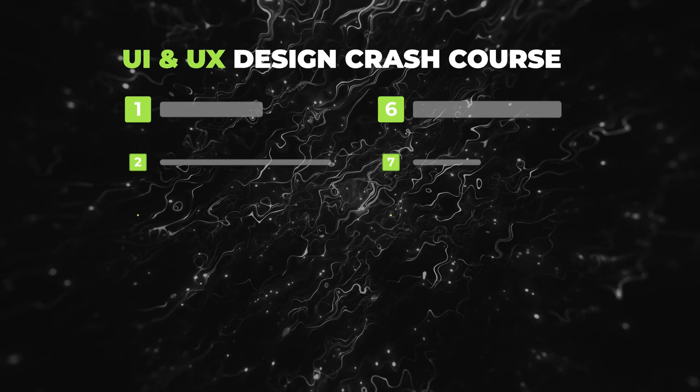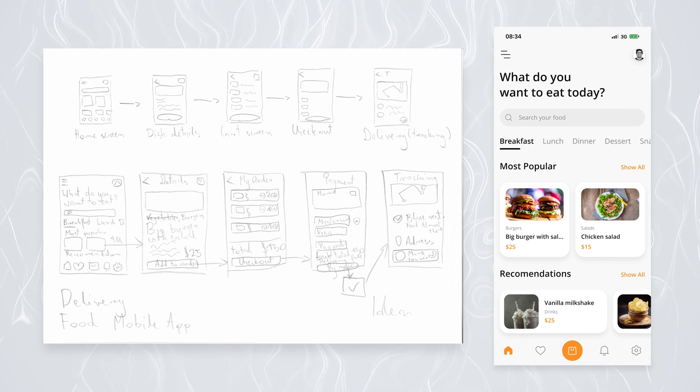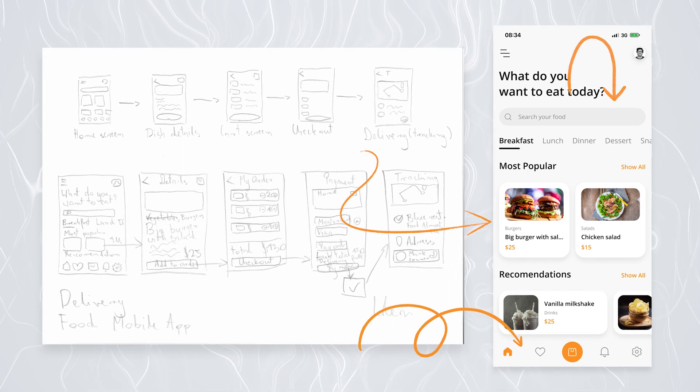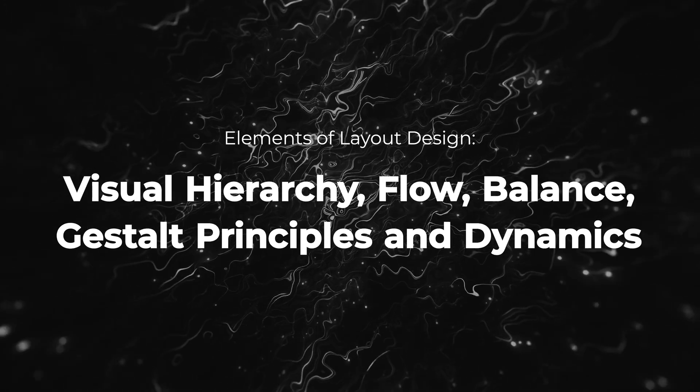In part 4 of my UI/UX design crash course series, we'll cover layout. Layout defines how different elements of your designs are put together on the screen. No matter what you are designing, a careful arrangement of content is essential for showing users what they need to know and what they can do with it. There are several elements that define a good layout: visual hierarchy, flow, balance, gestalt principles, and dynamics.